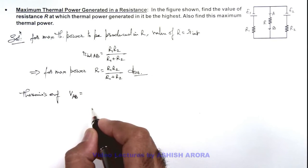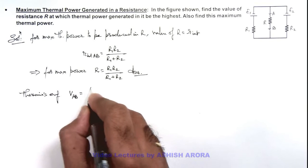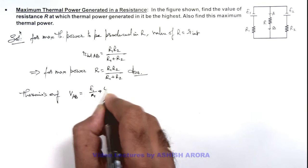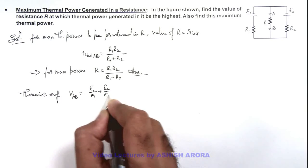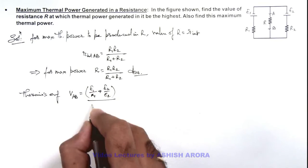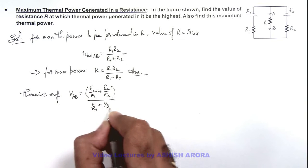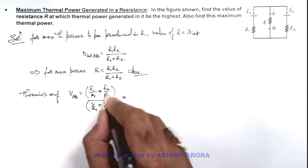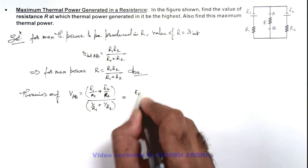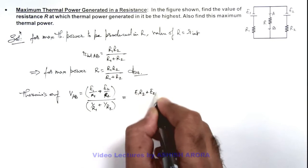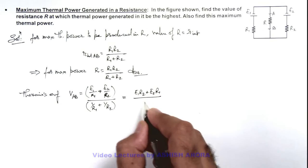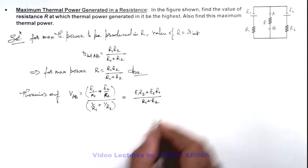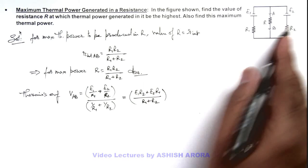The Thevenin's EMF of the circuit can be written as V_ab — the potential difference across terminals A and B — and that is given as (E1/R1 + E2/R2) divided by (1/R1 + 1/R2). Simplifying this, we get (E1*R2 + E2*R1) / (R1 + R2). This is the equivalent EMF for these two batteries in parallel.